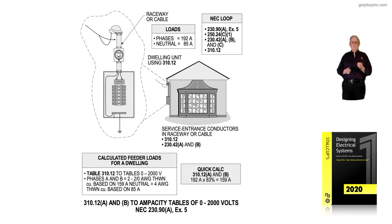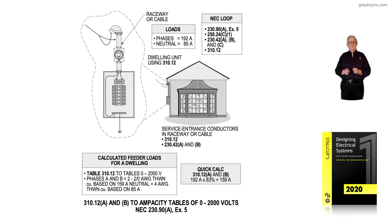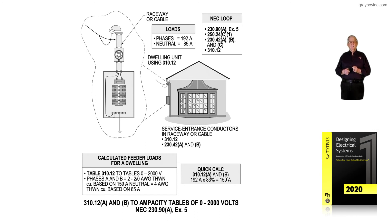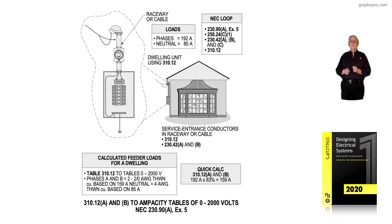310.12A is for services, the 83% rule. 310.12B is for feeders. Notice in the calculated feeder loads for dwelling units in the boxed-in information, Table 310.12, looking at the 0 through 2,000 volt table, phases A and B equal two-aught THWN copper conductors by reducing down two sizes from the calculated load. The neutral is a number four based upon 85 amps. The loading on phases is 192 amps and the neutral load is 85 amps.